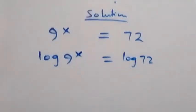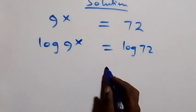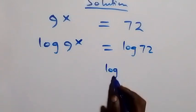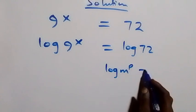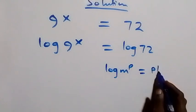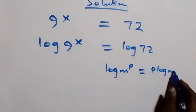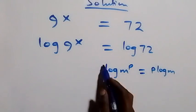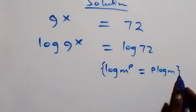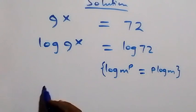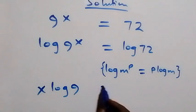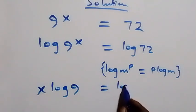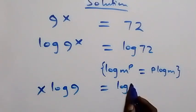Applying the power law of logarithm, which is log m raised to power p equals to p log m. Here the power we have is x, and this becomes x log 9 equals to log 72.